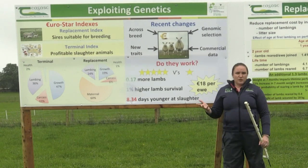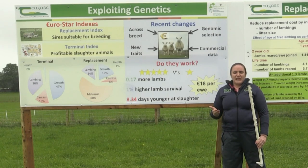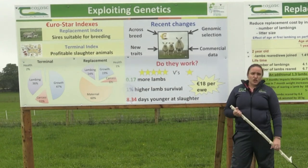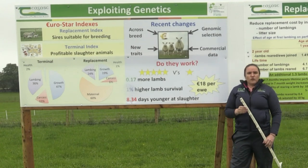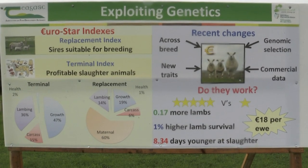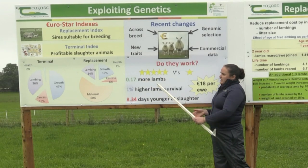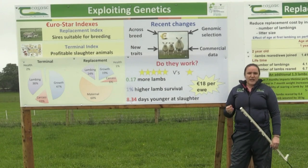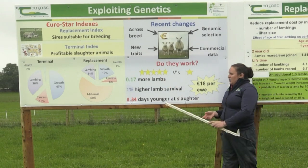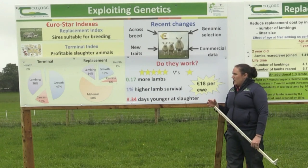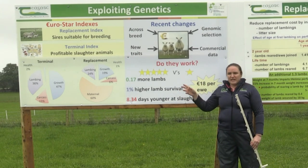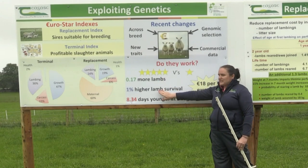Do the indexes actually work? If you select a five-star ram, will it yield more performance and profit? We undertook an exercise last year in conjunction with Sheep Ireland, looking at commercial animals only — comparing five-star rams to one-star rams. On average, five-star animals on the replacement index give you about 0.17 more lambs per ewe per year, which directly impacts profitability. We're also seeing 1% higher lamb survival in five-star rams compared to one-star rams — and while 1% seems small, it accumulates every year.